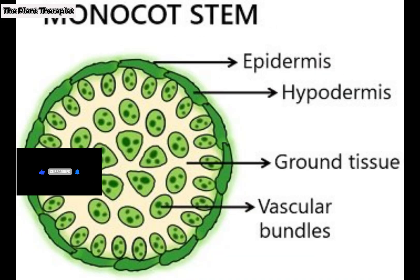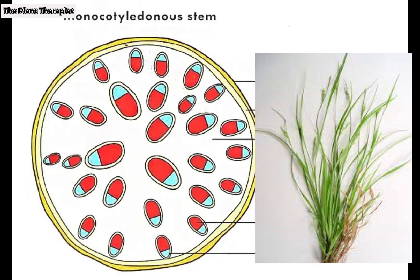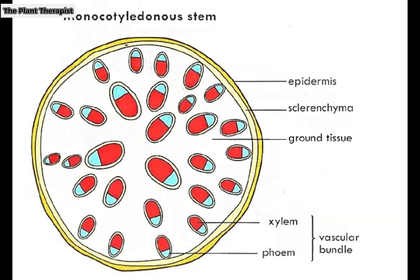Monocot stems: most monocots, such as grasses, are herbaceous plants that do not grow tall. The stems have neither a vascular cambium nor a cork cambium, and therefore produce no secondary vascular tissue or cork. In herbaceous dicots, the surfaces of the stems are covered by an epidermis, but the xylem and phloem tissues produced by the procambium appear in cross-section as discrete vascular bundles scattered throughout the stem, instead of being arranged in a ring as in a dicot. Each bundle, regardless of its specific location, is oriented so that its xylem is closer to the center of the stem and its phloem is closer to the surface.